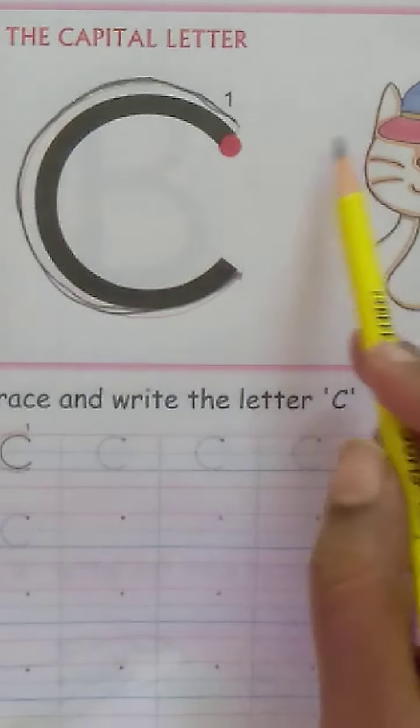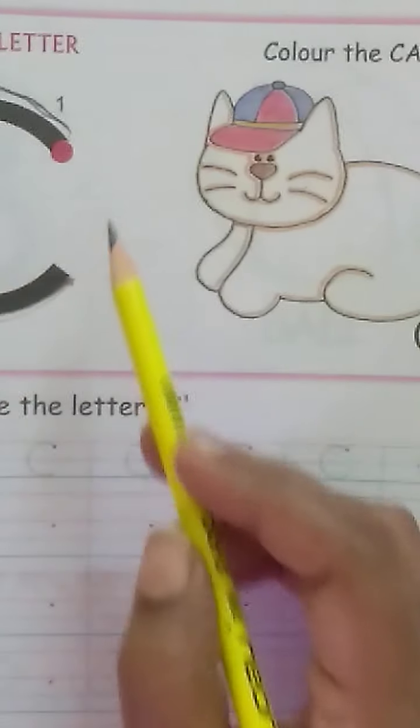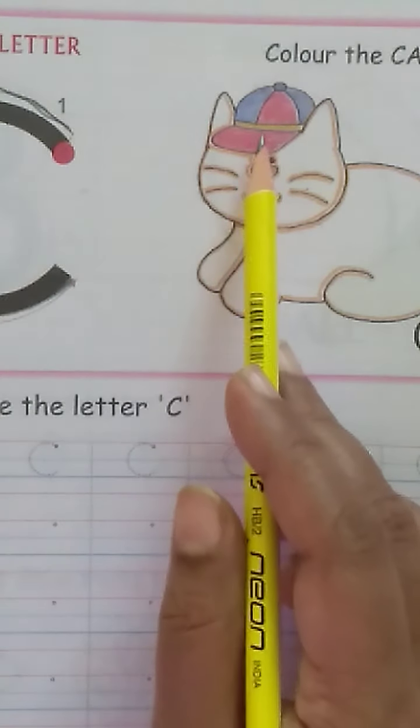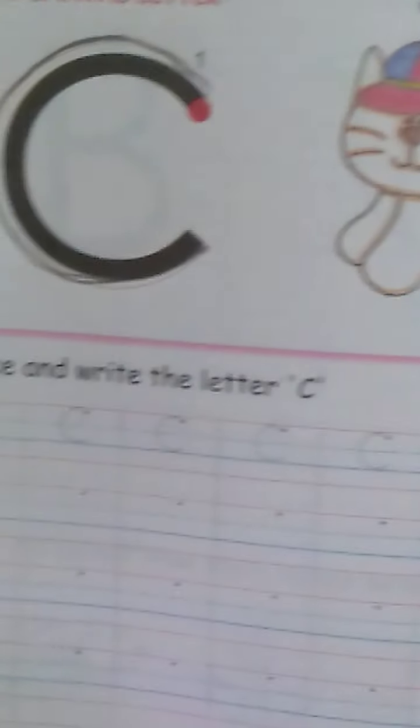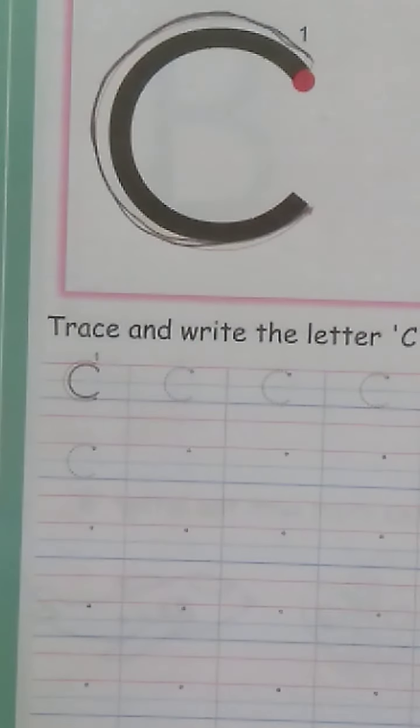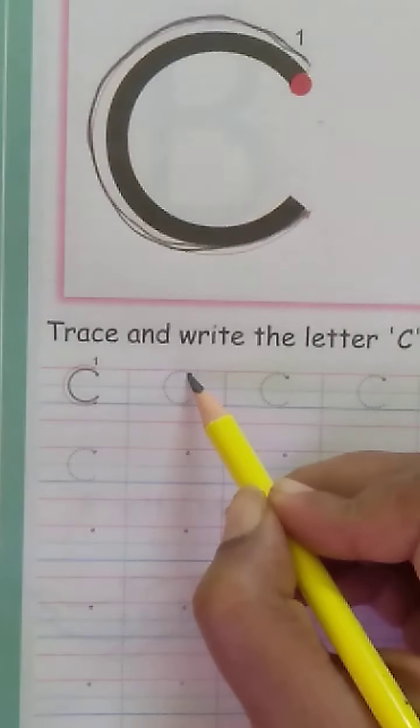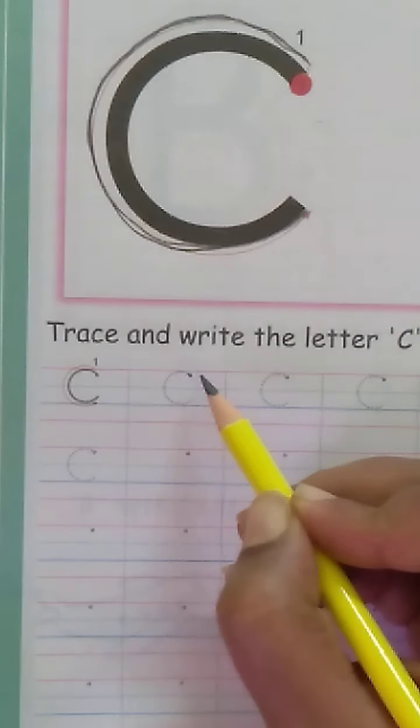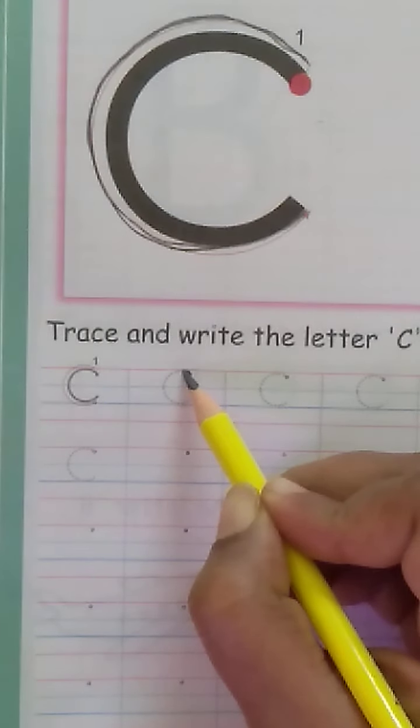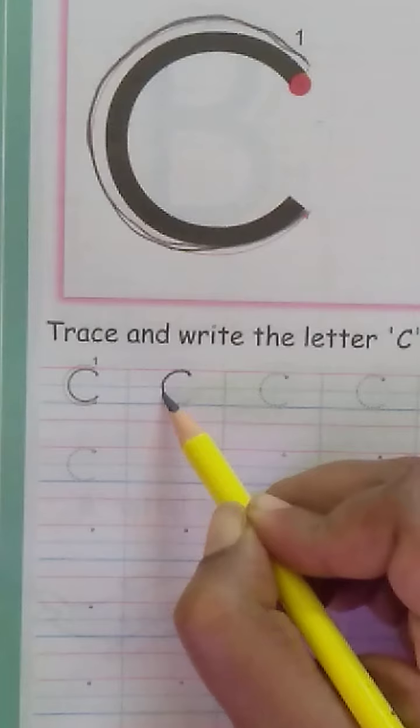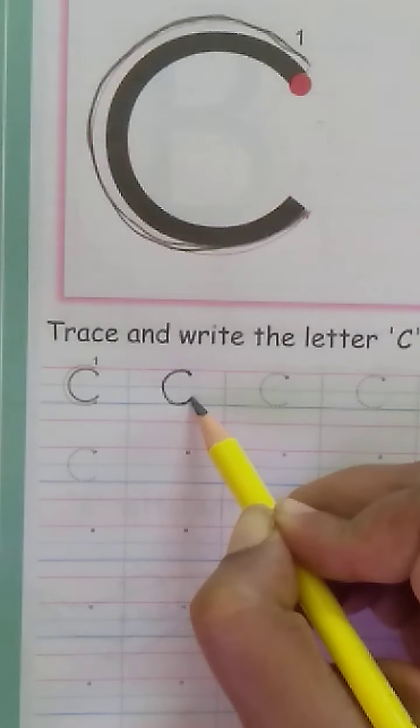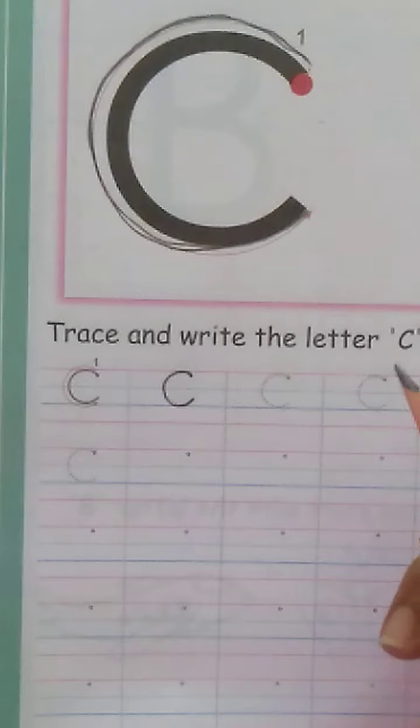C for cat. C for cap. C for cat. C for cap. Shall we start tracing on the four line? Start with the pink line from the black dot and join the dots carefully. You need to make a curve like this. And when the dot ends, you stop writing.